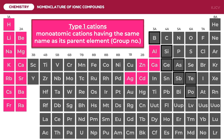Let's start with the cations. The first classification for cations is the type 1 ions. These are monoatomic cations having the same name as their parent element. This means that elements under the type 1 classification form ions that use the same element name as ions. Highlighted in the periodic table are the common type 1 cations. Another feature of type 1 cations is that the ions use the group numbers as their charges. For example, sodium, which is in group 1A, has a charge of positive 1 because it is a cation. Zinc is in group 2B, meaning it has a charge of positive 2.